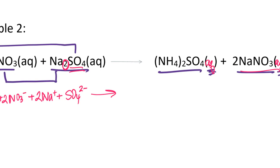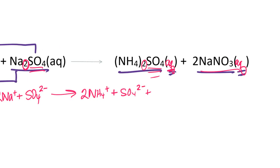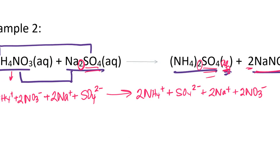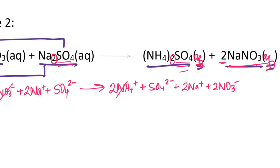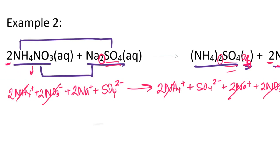On the product side, since ammonium sulfate is aqueous, I get ammonium ions — the subscript two means two moles of ammonium — plus sulfate ions. For sodium nitrate, also aqueous, the coefficient of two gives me two moles of sodium ions and two moles of nitrate ions. There was no precipitate in this reaction. Looking at the spectator ions, the ammonium cancels, the nitrate cancels, the sodium cancels, and the sulfate cancels — so basically everything cancels.